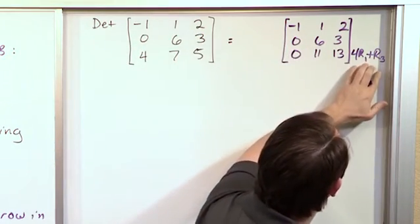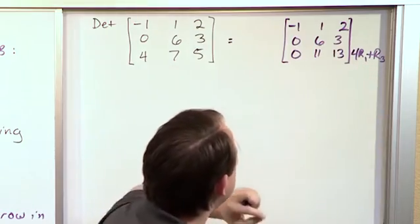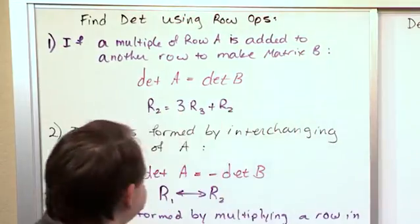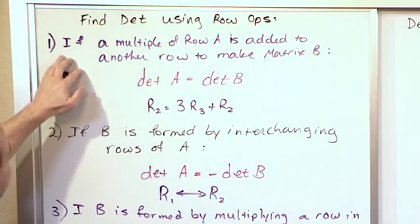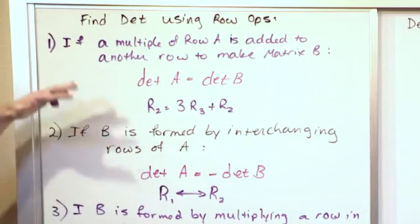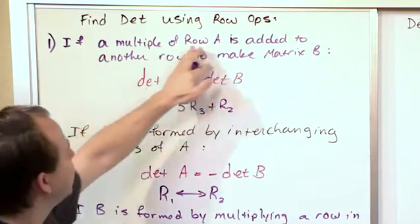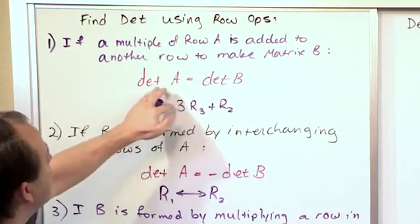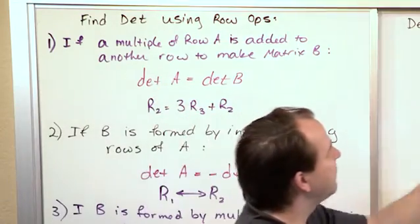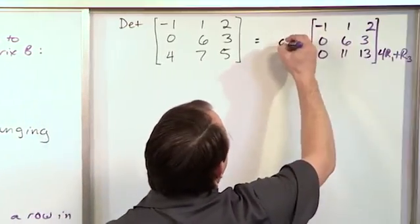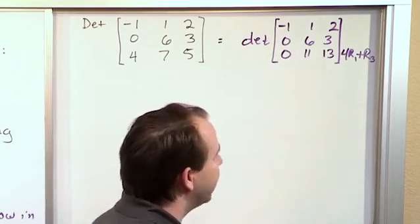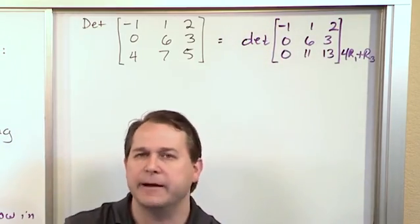Which is multiplying a row by a number and adding it to another row, which is step one here. Or these are the various options. If a multiple of row A is added to another row to make matrix B, then the determinants of A and B, in other words, the determinants of these two matrices are the same. So I can just put DET out here. I don't need to put any negative sign or anything. In this particular case, when you take a matrix...